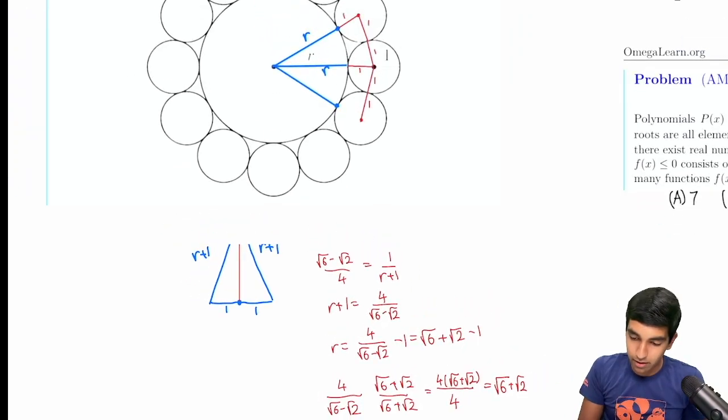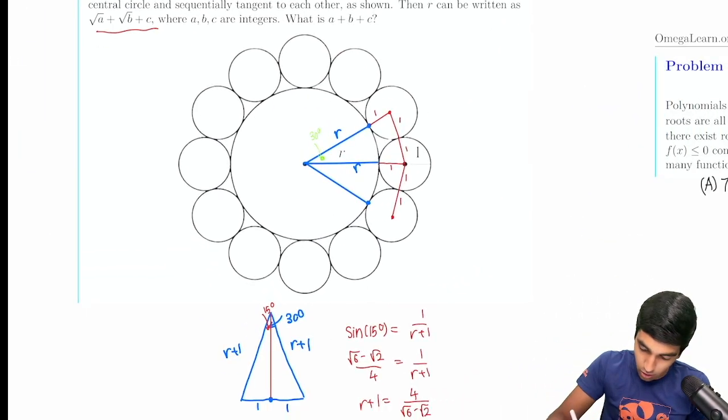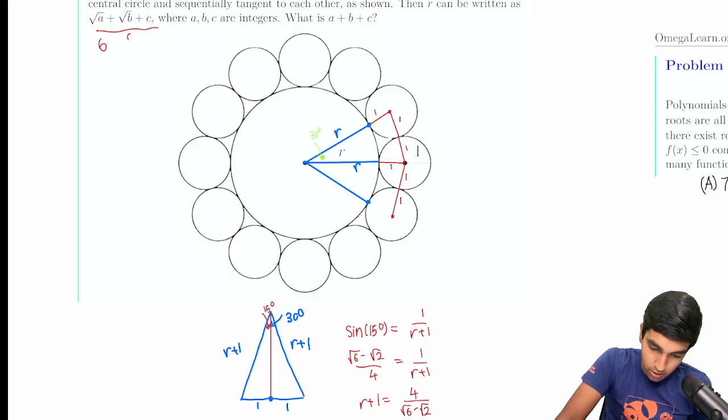So the answer is just we're asked to find a plus b plus c. So a is 6, b is 2, c is negative 1. The answer is 7.